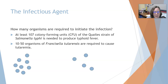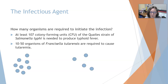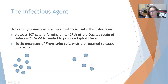You also have to ask how many organisms are required to initiate the infection — does it require just a few, or a very large dose like millions? At least 10^7 colony-forming units of the Quail strain of Salmonella are needed to produce typhoid fever, but only 10 to 50 organisms of Francisella tularensis are required to cause tularemia. For cholera, around a million organisms in water are required. So if it requires a lot and you only get a small dose, you may not get infected.